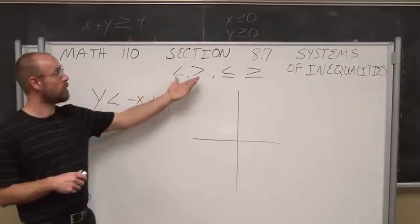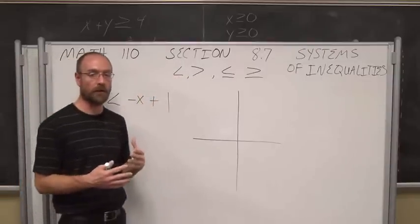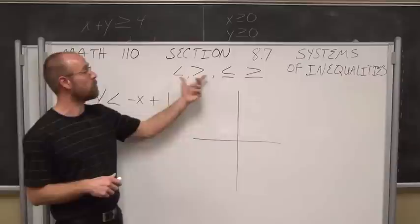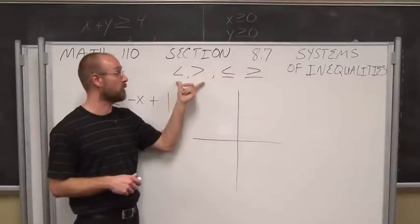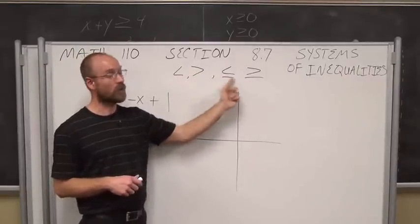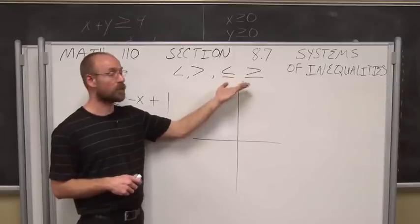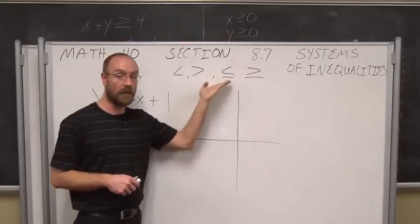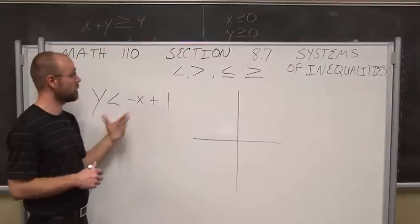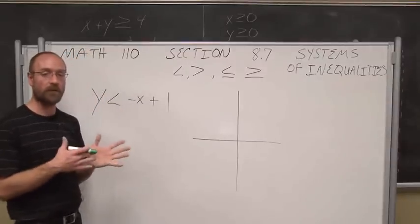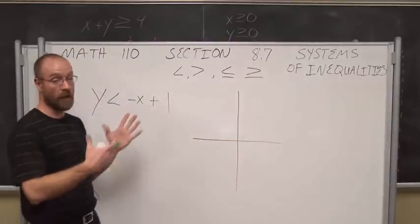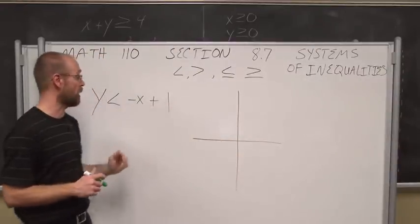If we look at this, hopefully we recall when it comes to inequalities, the first thing we do is graph a boundary line. That boundary line is determined to be either a dashed line if it's less than or greater than, or a solid line if it contains the points on the line by having a less than or equal to or a greater than or equal to. So we're actually dividing our Cartesian coordinate system into two areas: one side of the line and the other side of the line.